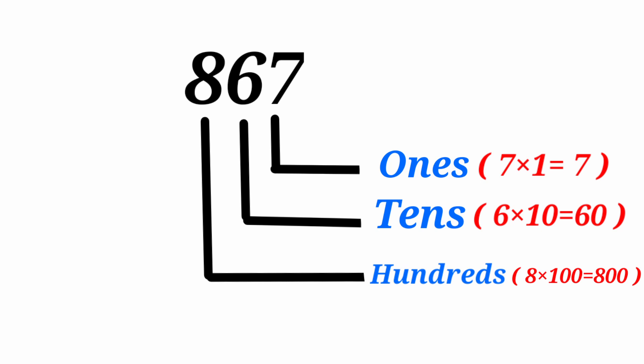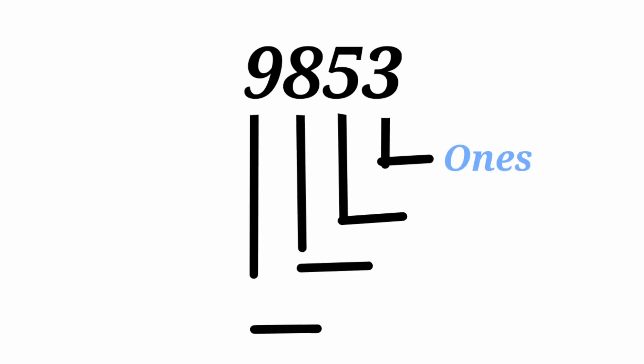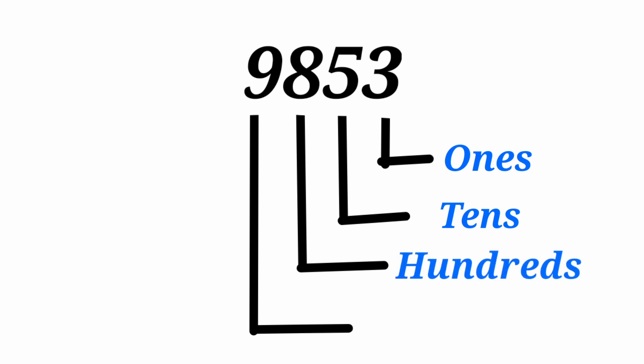4-digit number: 9,853. This is the 4-digit number. 3 is in the 1s place. 5 is in the 10s place. 8 is in the 100s place. 9 is in the 1,000s place.